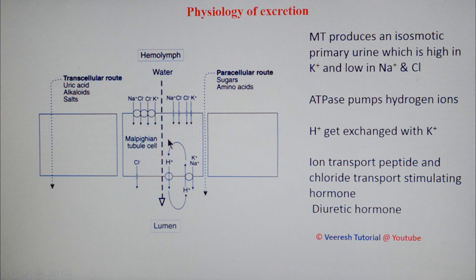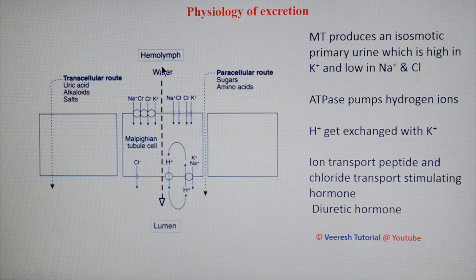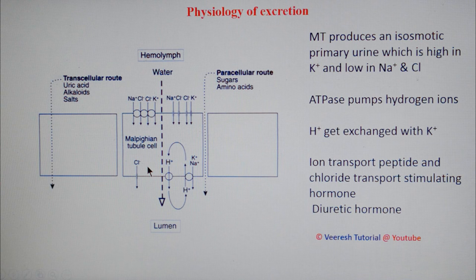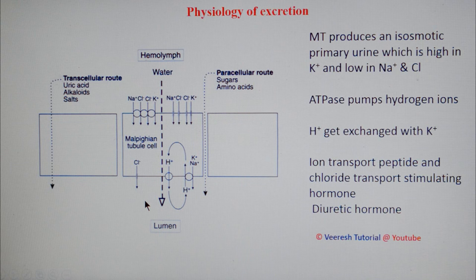Malpighian tubules produce primary urine which is rich in potassium ions but low in sodium and chloride ions. ATPase enzyme pumps hydrogen ions into the lumen of the Malpighian tubules from the hemolymph. By an antiporter system, hydrogen ions are exchanged with potassium ions, creating high osmotic pressure inside the lumen. As a result, water and solutes move into the tubules. Reabsorption of some substances takes place inside the Malpighian tubules and also selectively in the rectum, and finally nitrogenous waste material is excreted.